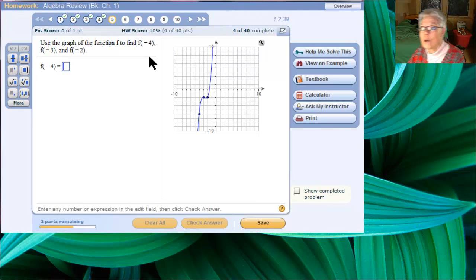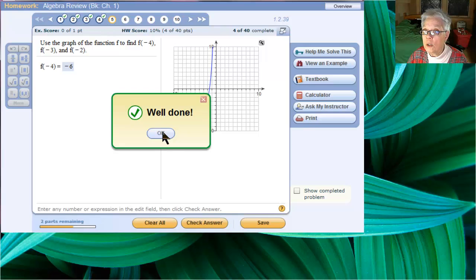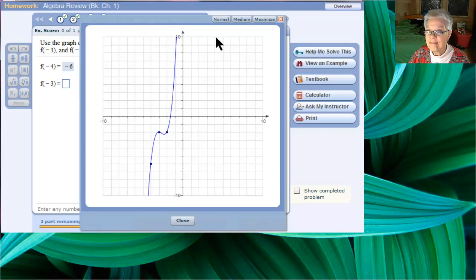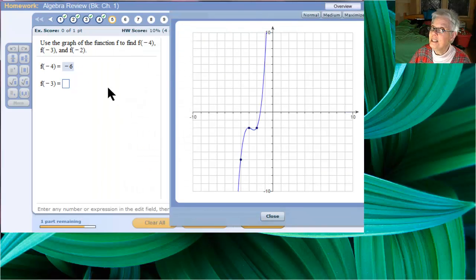This is going to be very educational. f of negative 4 is the y-coordinate that goes with the point on the graph at negative 4. So, if you go to x equals negative 4, come down to the point, you'll find the y-coordinate and it is negative 6. Yeah, definitely need to make it bigger.